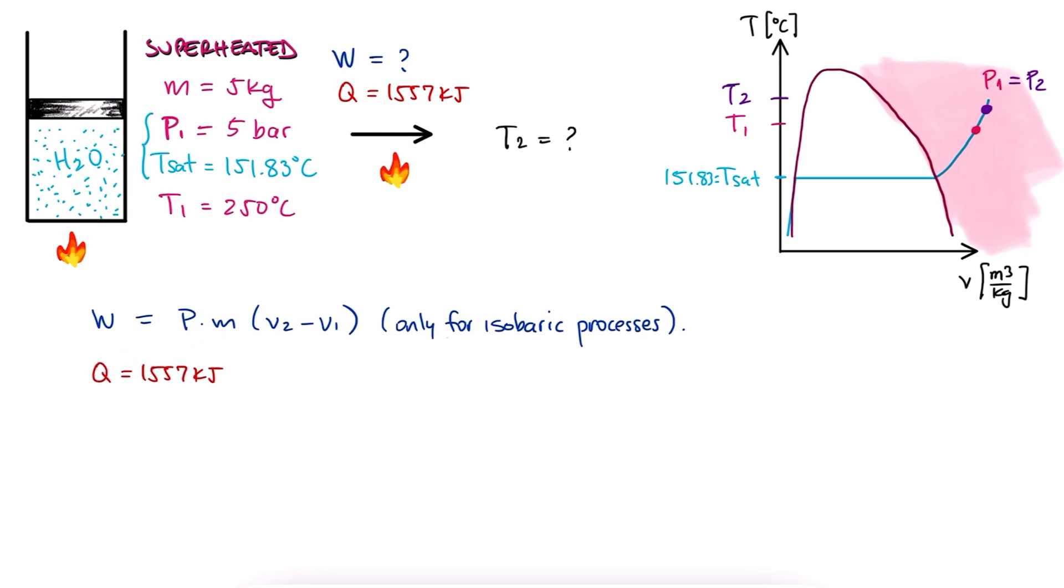Since the heat that we're adding is equal to the change in enthalpy H2 minus H1, or M H2 minus H1, we'll find H1 from the superheated tables to solve for H2, and with it find the temperature for state 2.